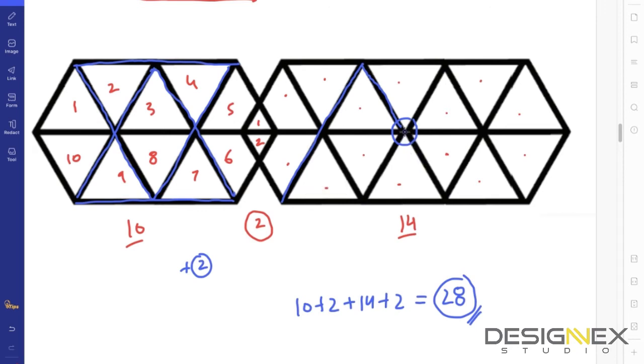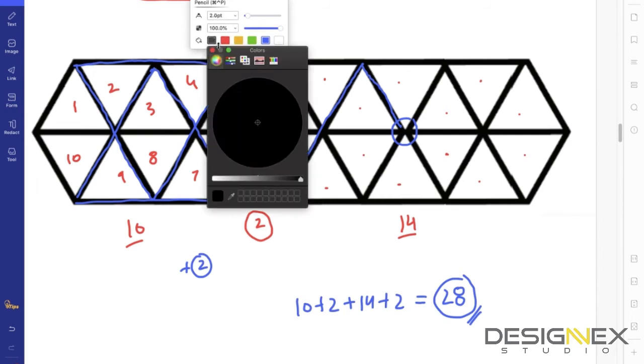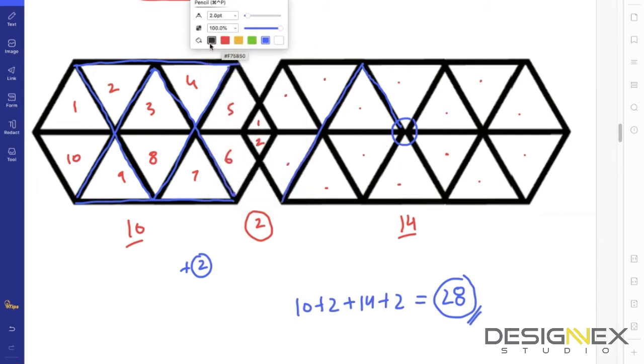If this path, this black path, would have continued up till here - this whole black section - then I would have easily counted it. There was no issue. I could have counted this triangle.